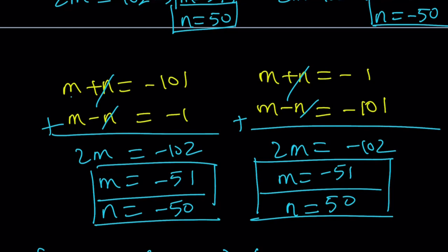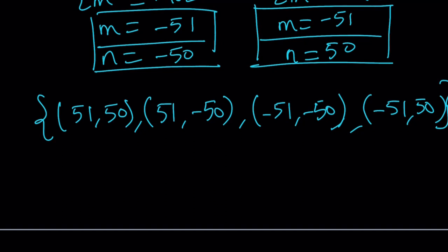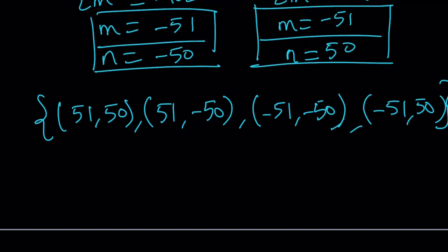You could also write it with a plus minus sign if you want to save space. Negative 51, negative 50. And negative 51, comma 50. And those are going to give you all the solutions. Let me move this a little bit to the left so it doesn't cut off.